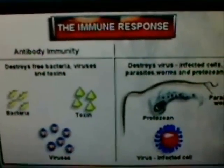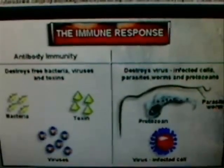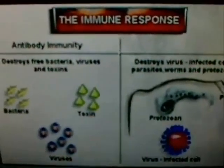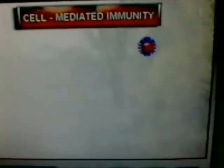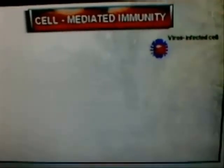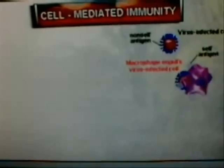Antibody immunity provides protection from free bacteria and viruses, as well as toxins. If the cells of the body become infected with a virus, or parasitic worms or protozoans invade the body, the other type of immunity — cell-mediated immunity — becomes involved. Shown here is a cell that has been infected with a virus. Notice the viral non-self antigens on the surface of the cell. In the first step of cellular immunity, the virus-infected cell is engulfed by a macrophage, and the viral antigens are pressed into the self-antigens, protruding from the macrophage's plasma membrane.